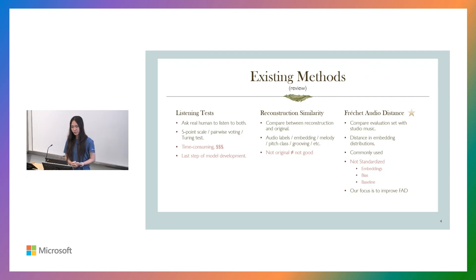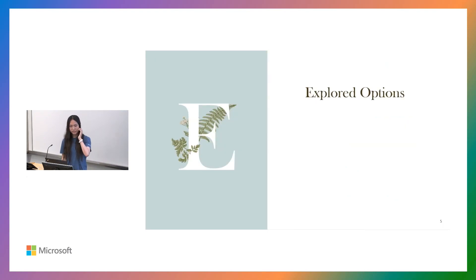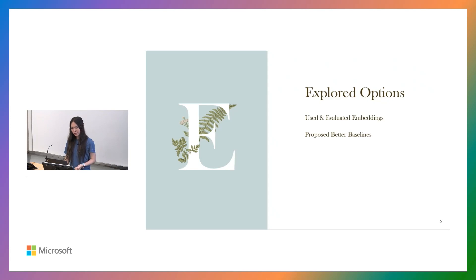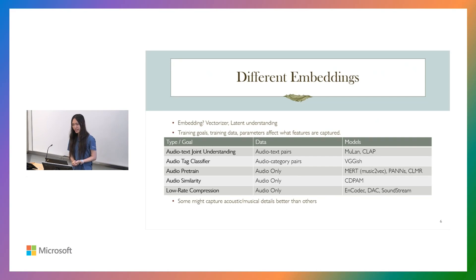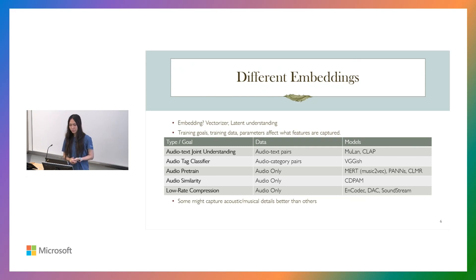So our main focus will be to improve Fréchet Audio Distance. Here are our explored options: we used and evaluated different embeddings, we proposed better baselines other than MusicCaps, and we used the FAD infinity method to eliminate the sample size bias. We'll start with the different embeddings. So what is an embedding?